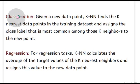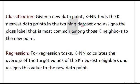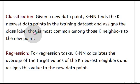KNN covers two things: classification and regression. In classification, KNN finds the K nearest data points in the training dataset and assigns the class label that is most common among those K neighbors to the new point. So if we already have classified sets and we are given a new data point, we see which dataset that point is closest to and classify it into that particular dataset.